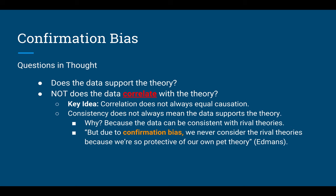Consistency does not always mean the data supports the theory, because the data can be consistent with rival theories. Rival theories are where the same data is used to build a different theory. This is where we get into the idea that data is objective and theory is subjective. Facts are objective — they can be used on all sides of arguments. The theories, opinions, and stances built around those facts are the debatable element.